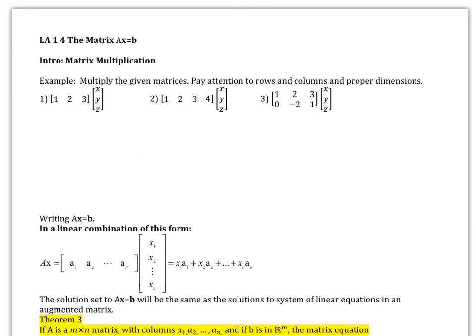First of all, some background. We want to do some matrix multiplication, and they go about it a little bit funny with this. In section two, we'll get into it more thoroughly, but they want to look at both the vector form and the matrix form of these setups that we have. So we want to multiply the given matrices and pay attention to rows and columns and the proper dimensions when we multiply.